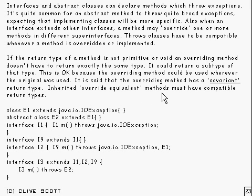Another situation that can arise is when you've got an interface that inherits from several other interfaces. The same method — or 'override equivalent' as the term is — basically means those methods have got to have compatible return types, and I'll explain what I mean in the next slide.